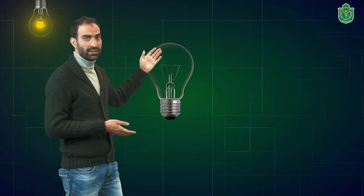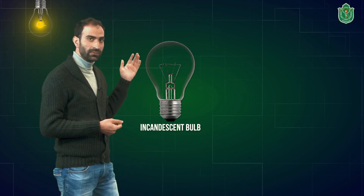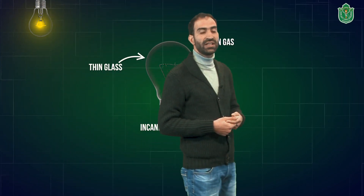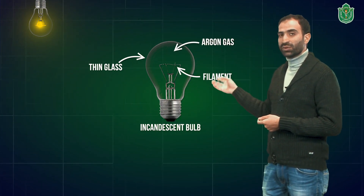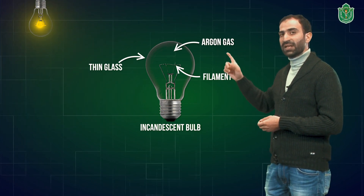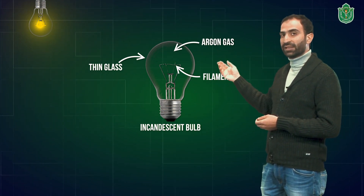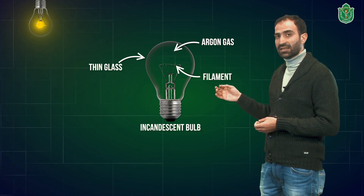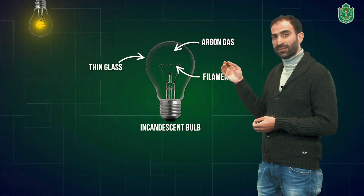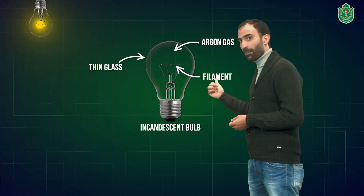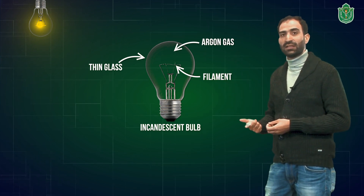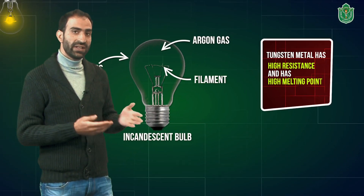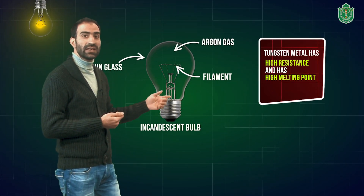Among the various appliances that work on the heating effect of electric current, one of the most common appliances that we use is a simple incandescent bulb. This bulb works on the simple principle of the heating effect of electric current. This bulb, which you see at your home, on the street or various other places, is made up of a very thin glass with a partial vacuum inside it and argon gas filled inside the bulb. It has a very high resistance thin coil known as a filament fitted inside it. This filament is made up of tungsten metal.